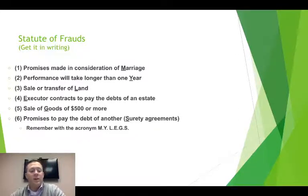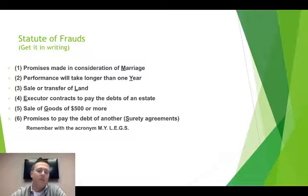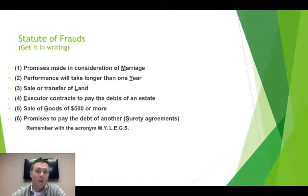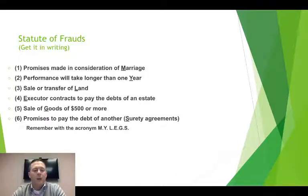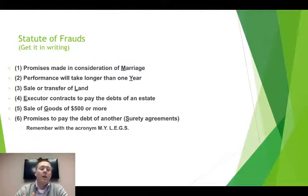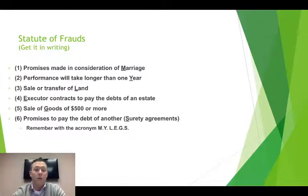Number four: the executor contracts to pay the debts of an estate. Number five: the sale of goods of $500 or more. This is one to keep in mind as we move into the next chapter, which is all about goods contracts — those will need to be in a proper form of writing. As long as it's worth $500 or more, it has to be in writing. For practical purposes, all of your business goods contracts will have to be in writing to be enforceable.